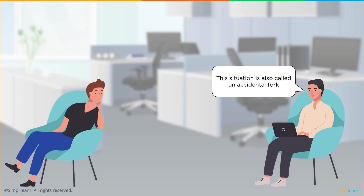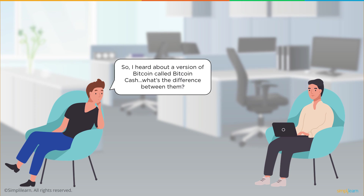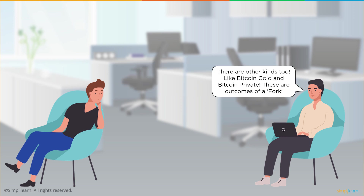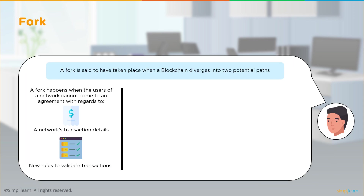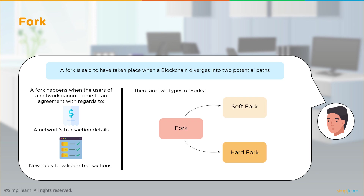This situation is also called an accidental fork. You may have heard of Bitcoin Cash, Bitcoin Gold, and Bitcoin Private — these are all outcomes of a fork. A fork is said to have taken place when a blockchain diverges into two potential paths. A fork happens when the users of a network cannot come to an agreement regarding a network's transaction details and the new rules to validate those transactions. There are two types of forks: a soft fork or a hard fork.